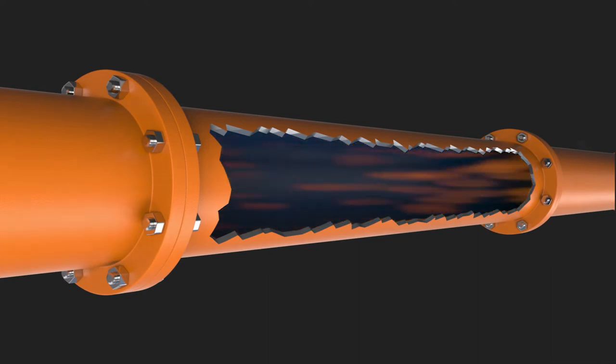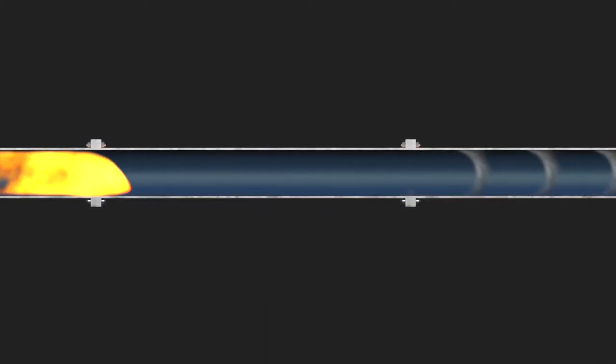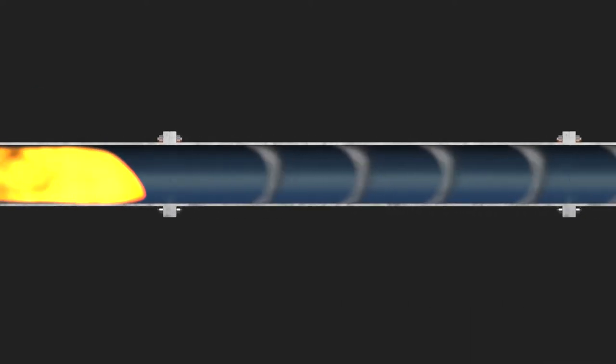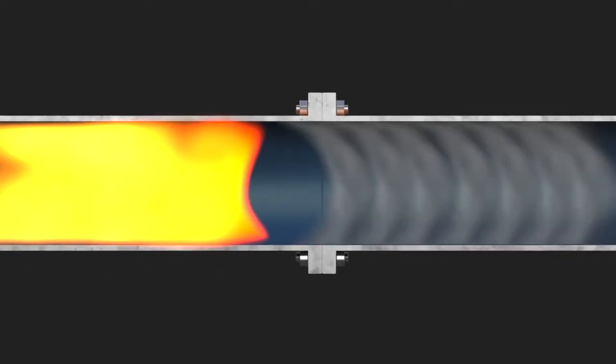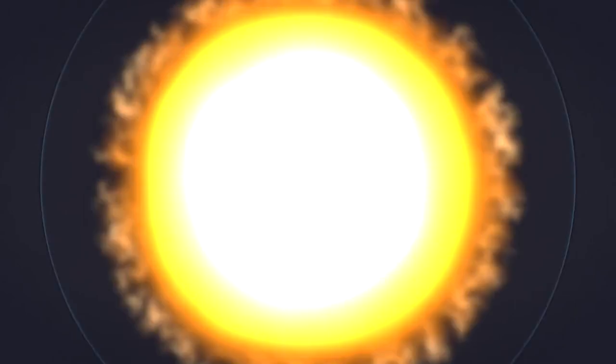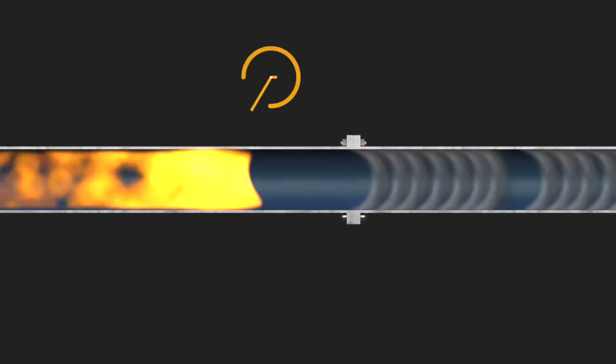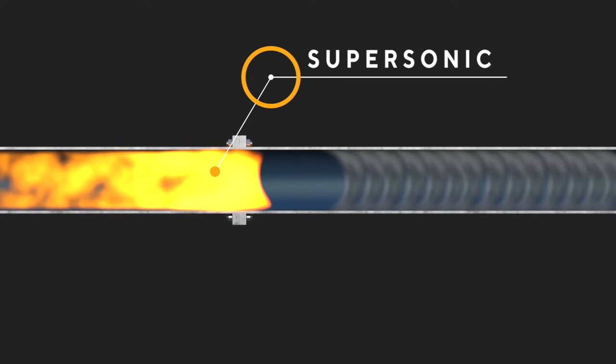This deflagration to detonation transition, often referred to as a DDT, is characterized by supersonic flame speeds in the range of 1600 to 3000 meters a second, and a shock wave that is now coupled to the flame front, creating enormous peak pressures.